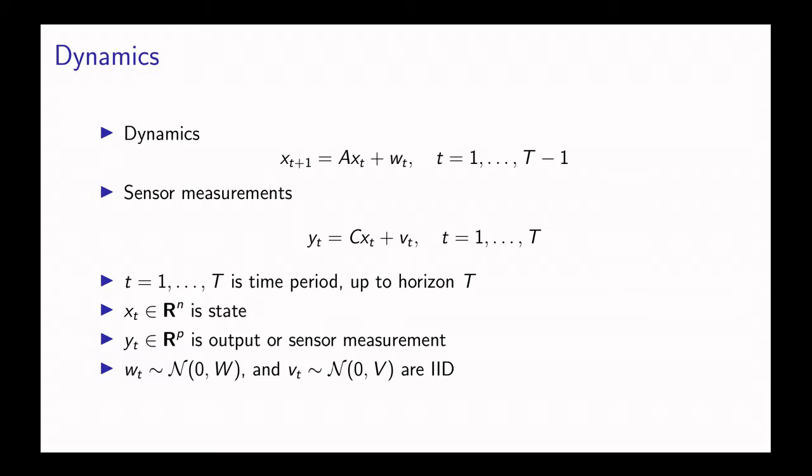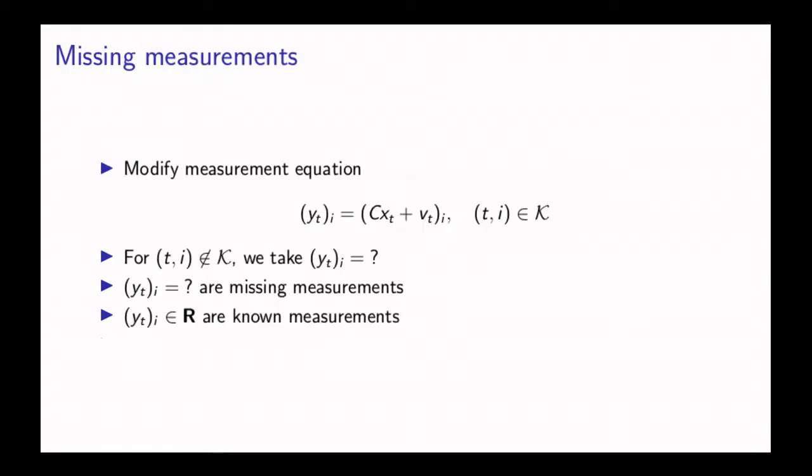A lot of the time some of the measurements can be missing, so we're going to modify the measurement equation so that when the measurement is known it's the actual measurement, and when it's not we make that measurement a question mark. We denote the set of times and entries that we know by the set script K.